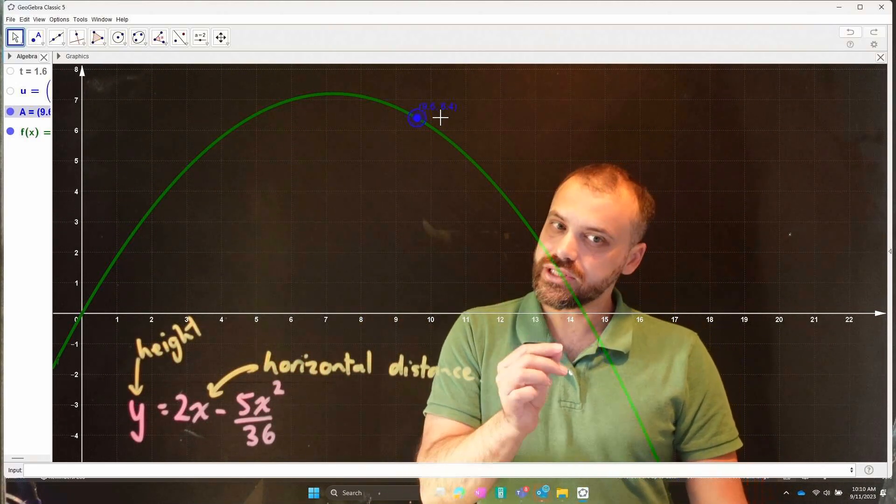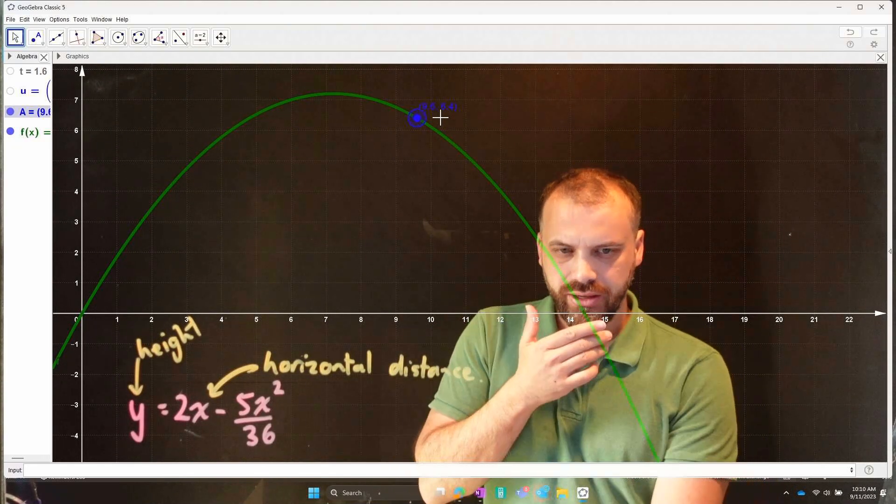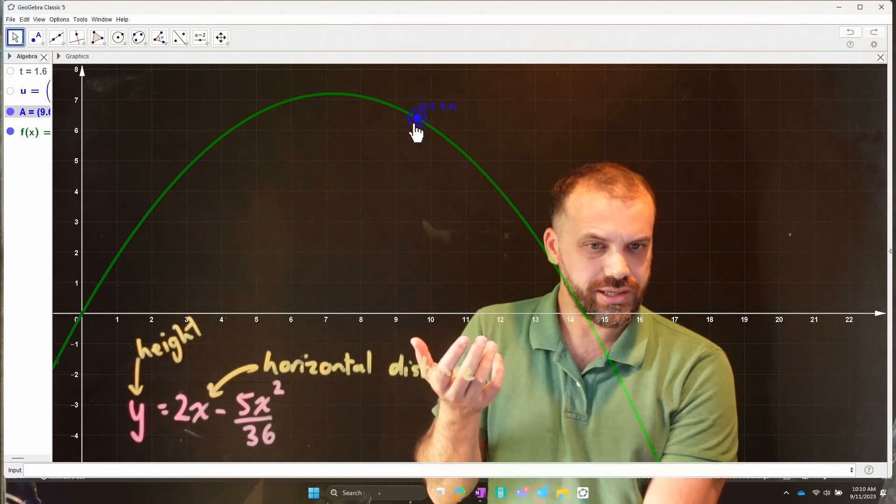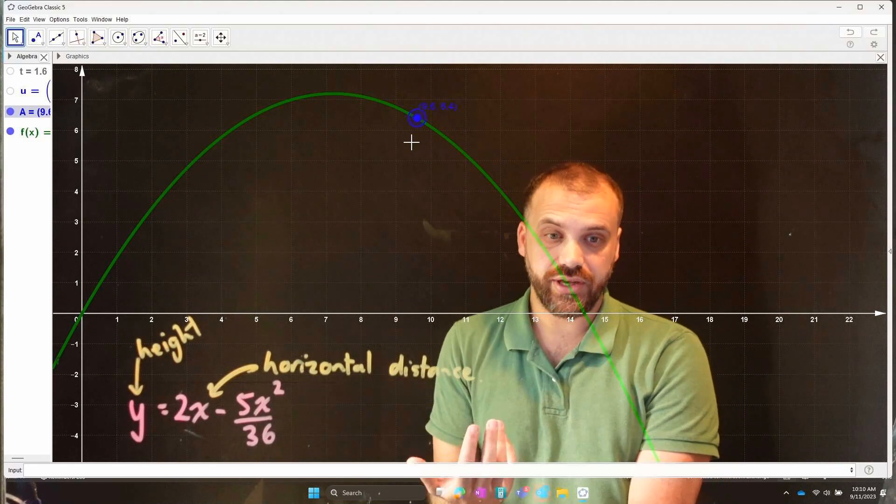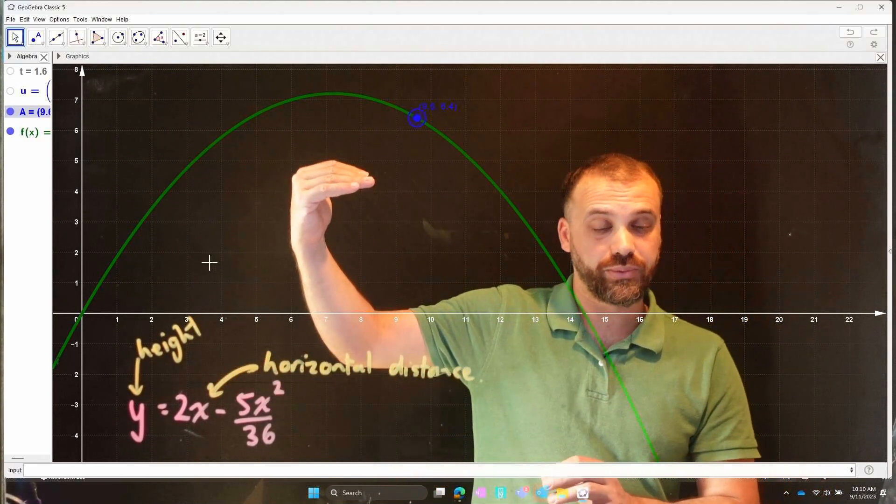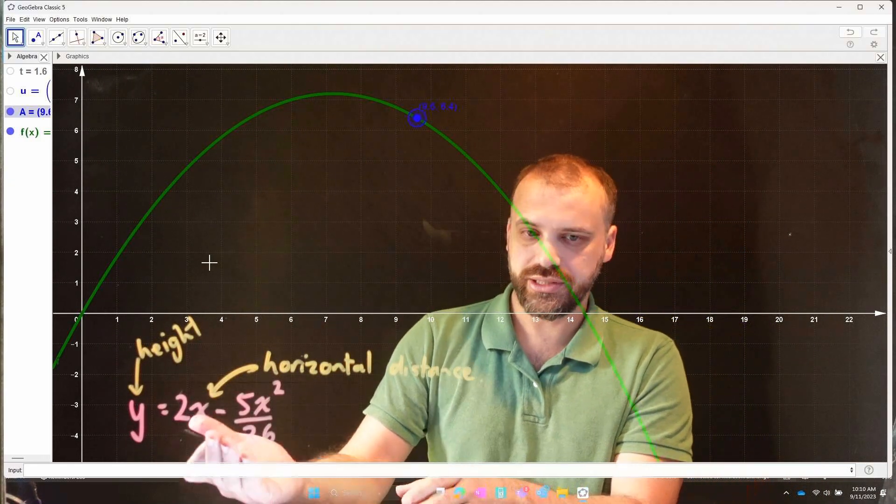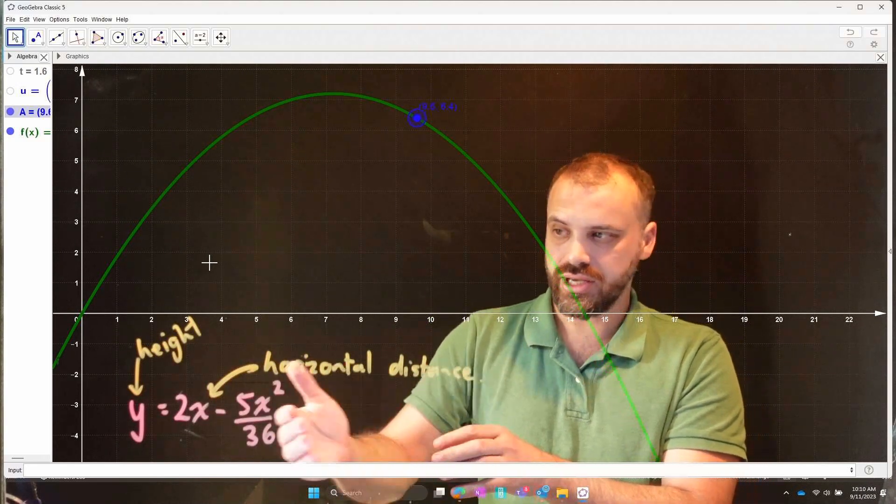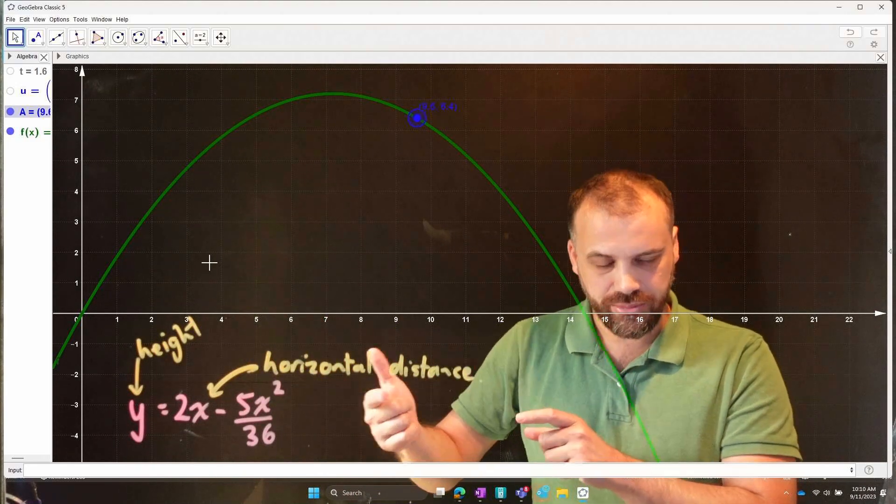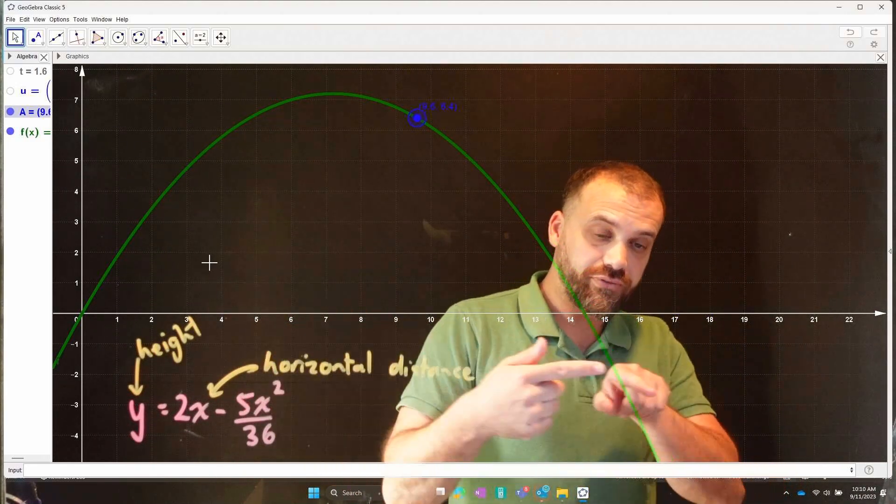But what it's not telling us is the time at which it is there. How long did it take the ball to get from here to here? We don't know. We don't have that information. We only know how far across it went and how far up it went. Now, we could write a different function, a function that had time instead of horizontal distance and height here. But if we wrote that function, then we'd have time on the x-axis and height on the y-axis, and we wouldn't know how far across it had gone.